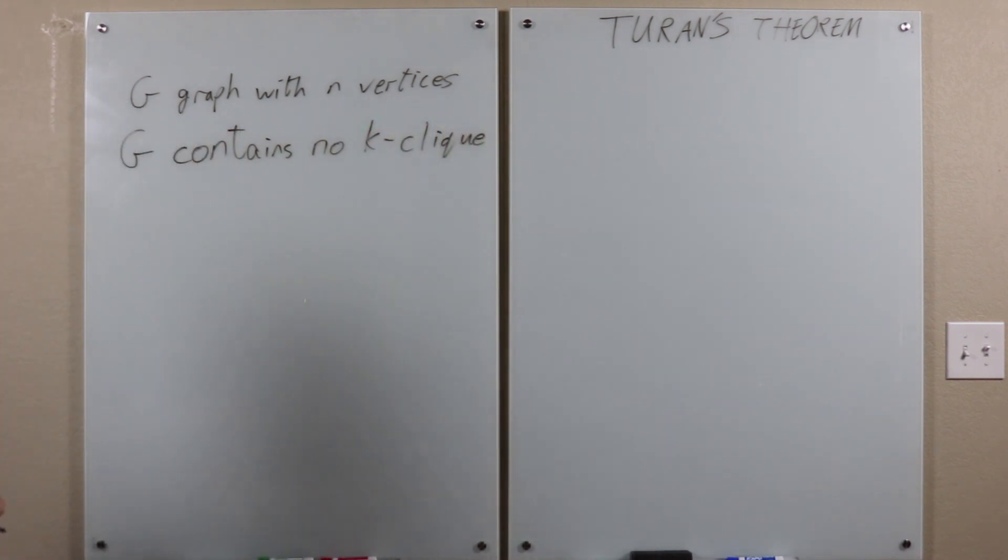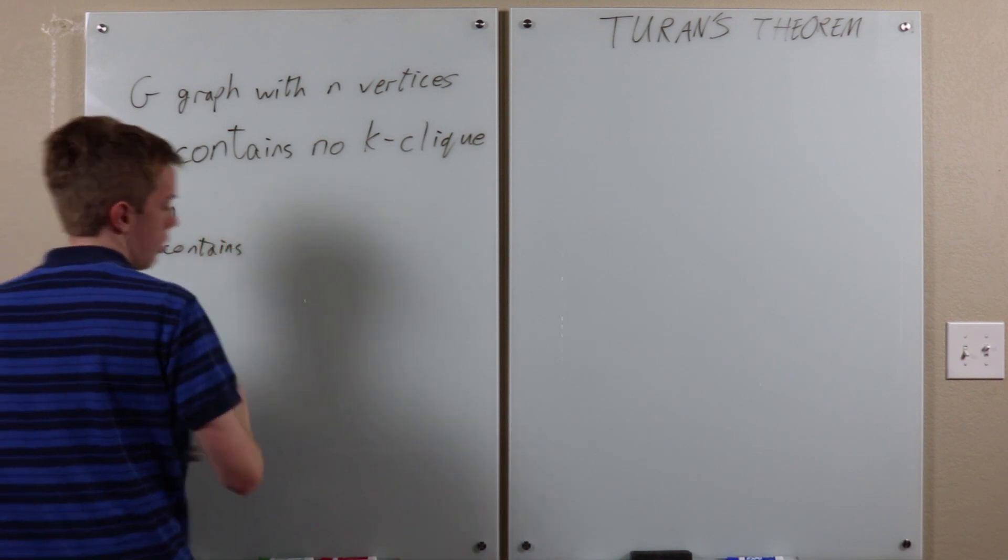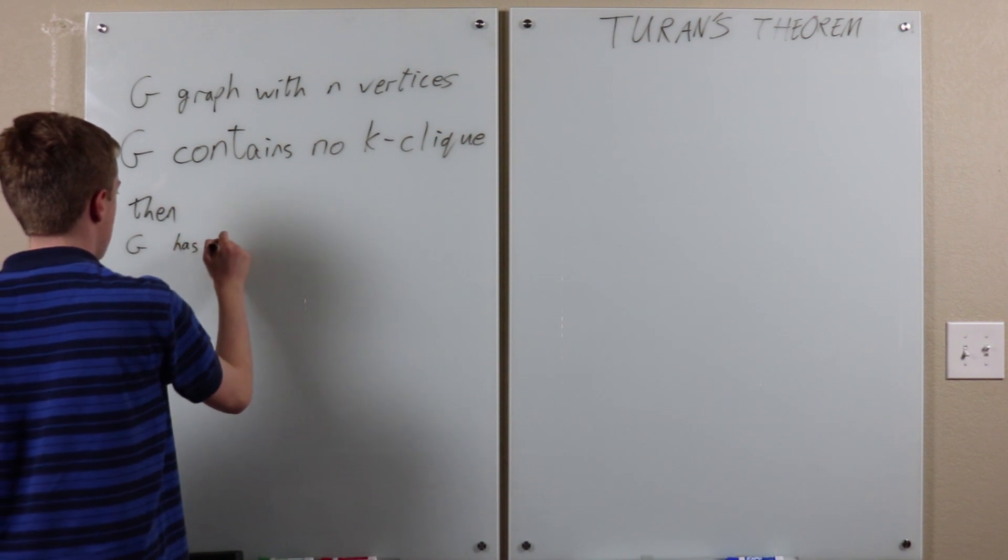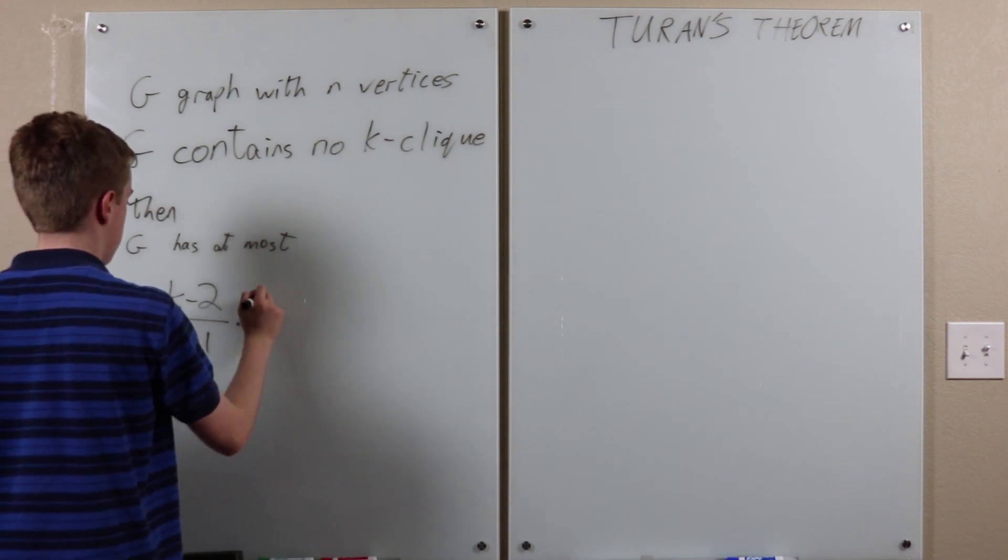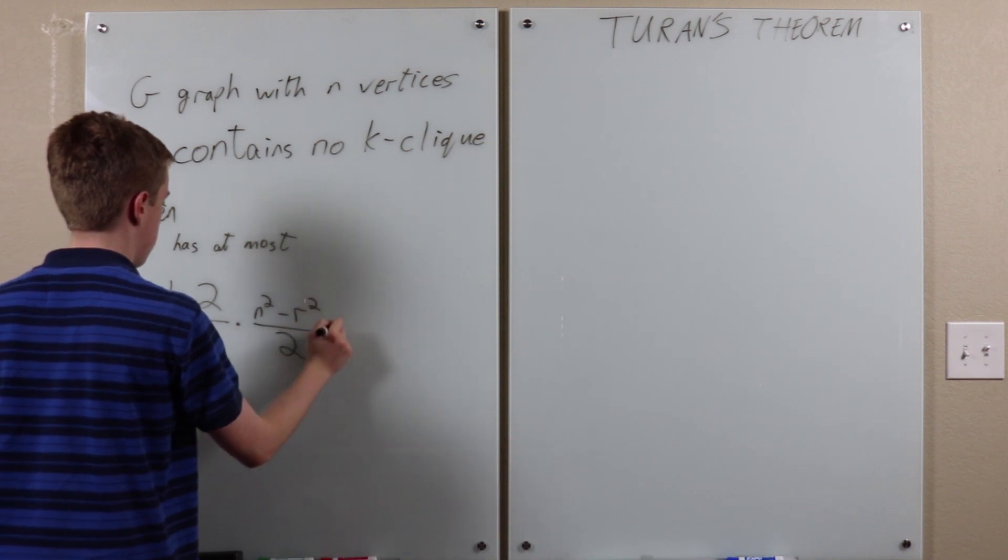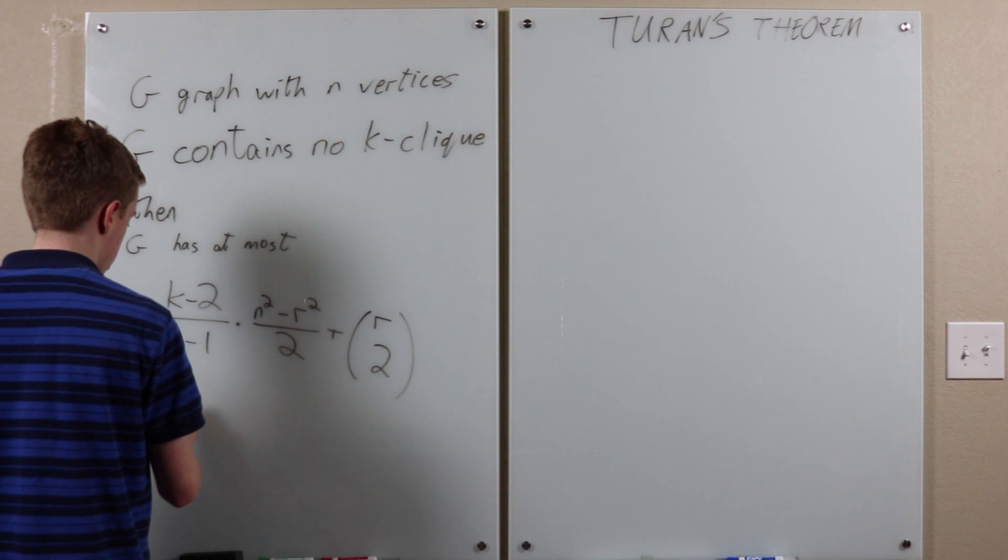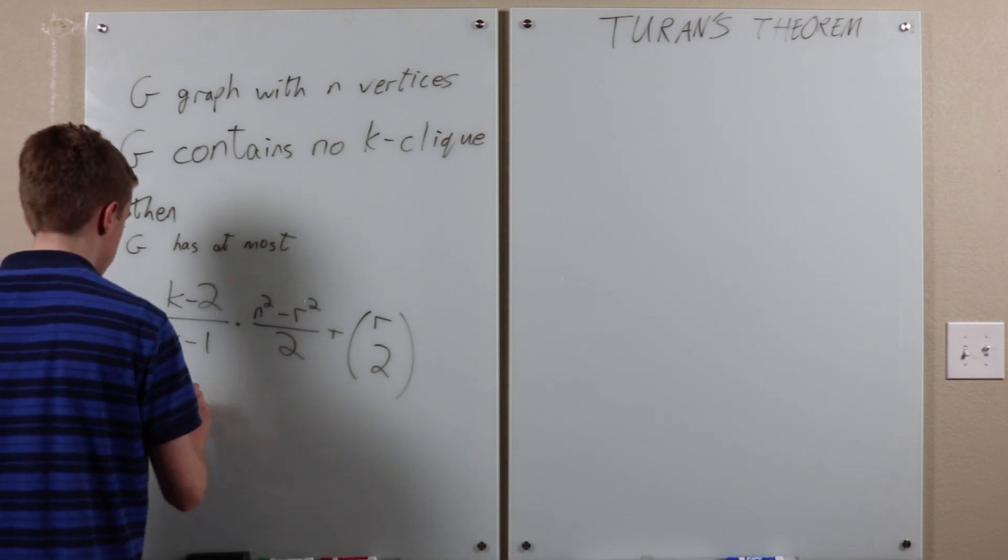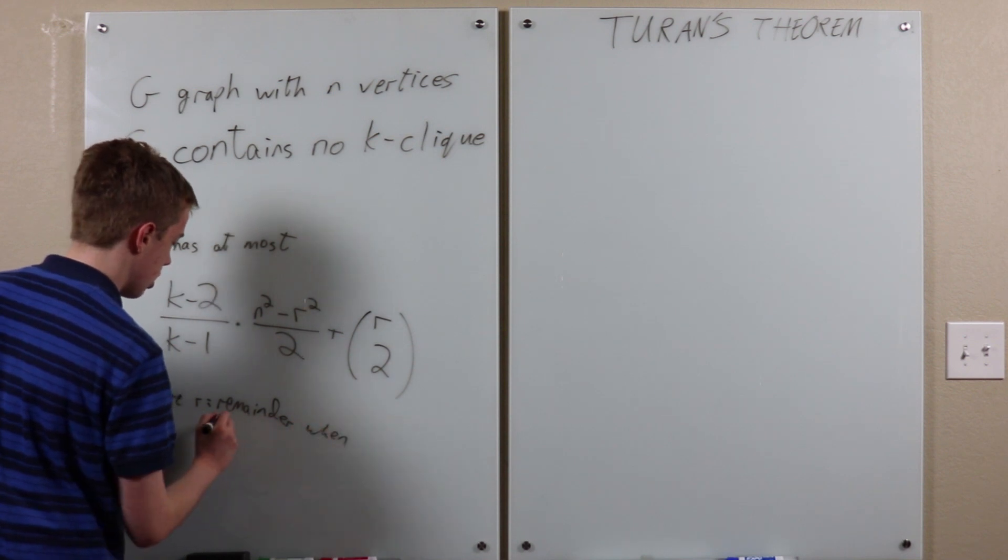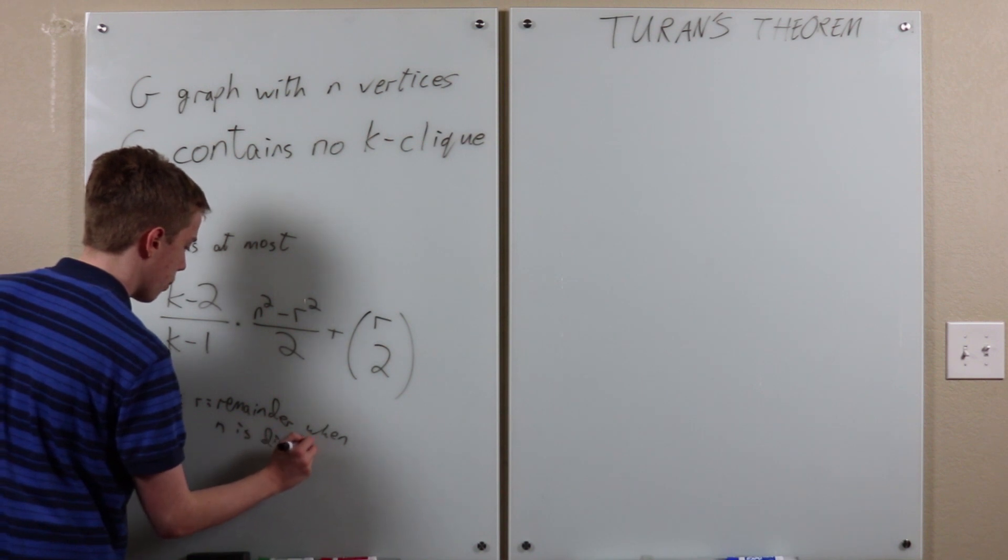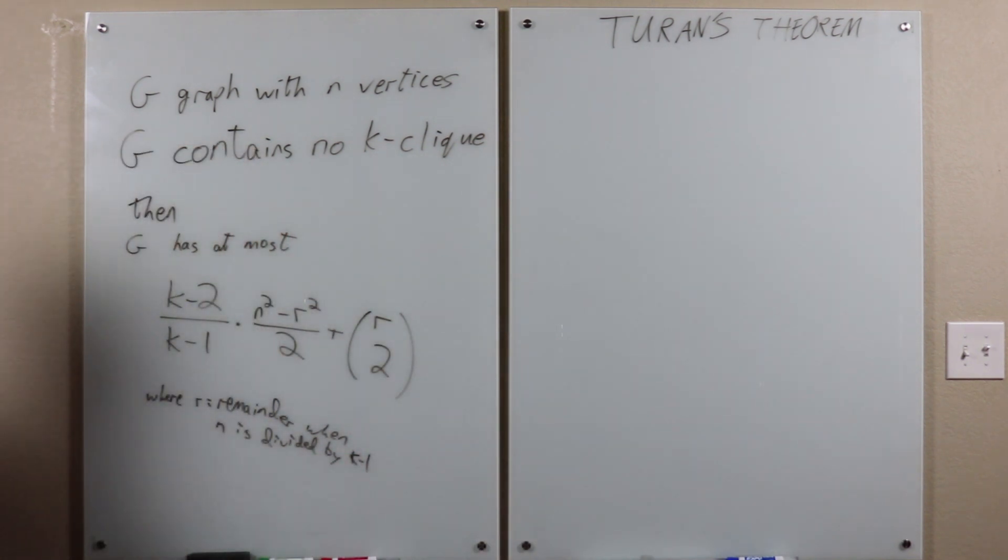then G has at most this many edges: k-1 times n squared over 2k minus 2 plus r choose 2, where r is the remainder when n is divided by k minus 1, sorry, not k plus 1.